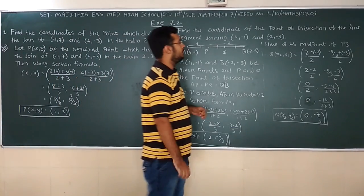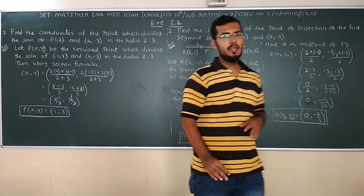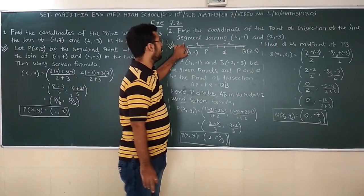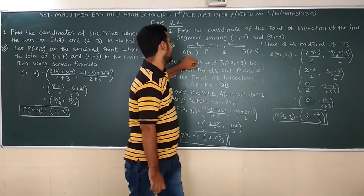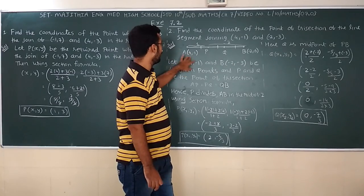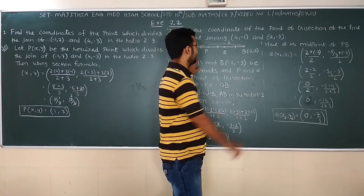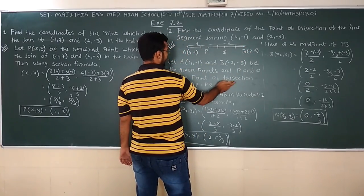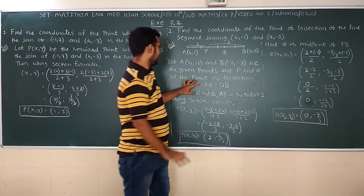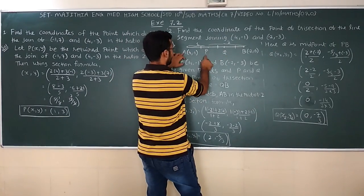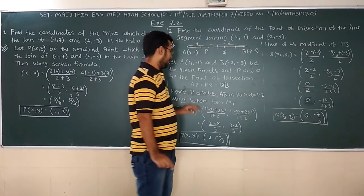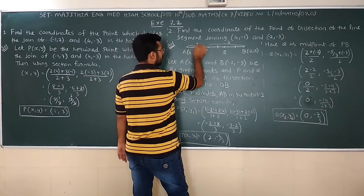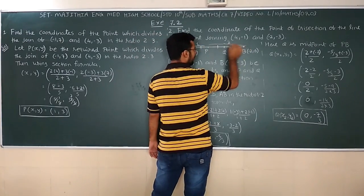Next one. Find the coordinate of the point of trisection. Trisection means what? There is a point that it divides in 3 equal parts. Set by joining (4,-1) and (-2,-3). Here we let A(4,-1) and B(-2,-3). That is line segment AB. The given points P and Q is the point of the trisection. So here we take P and Q. There is an equal part, AP is equal to PQ is equal to QB.